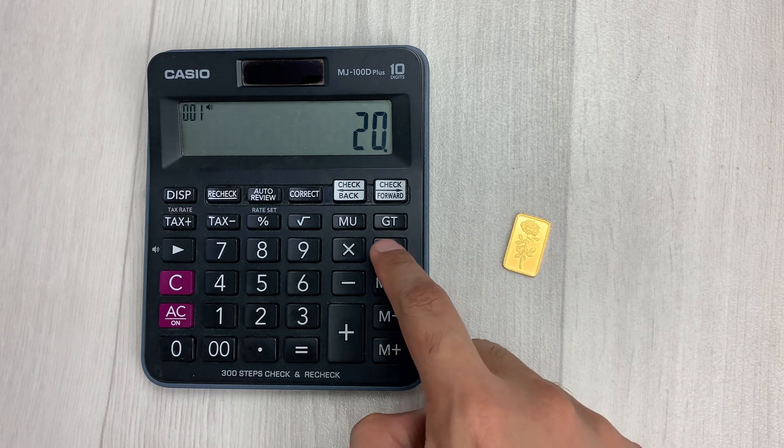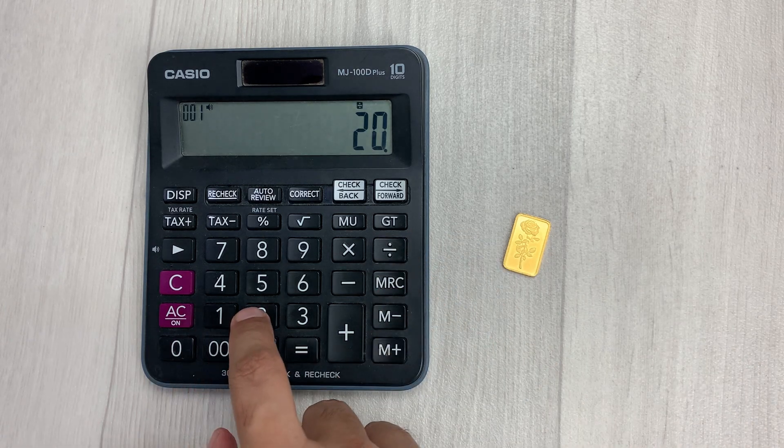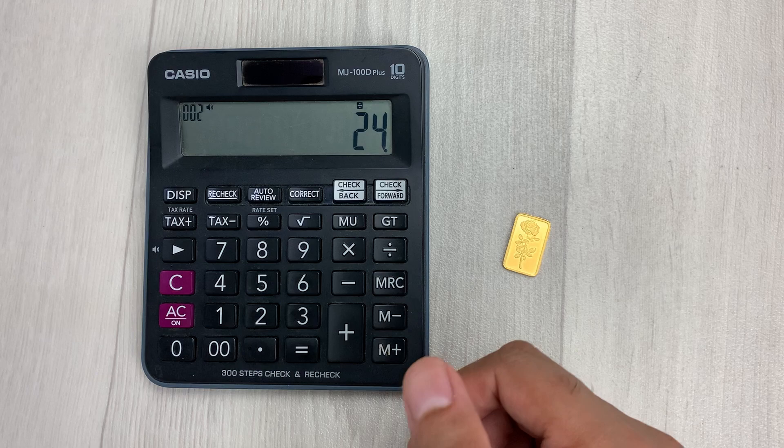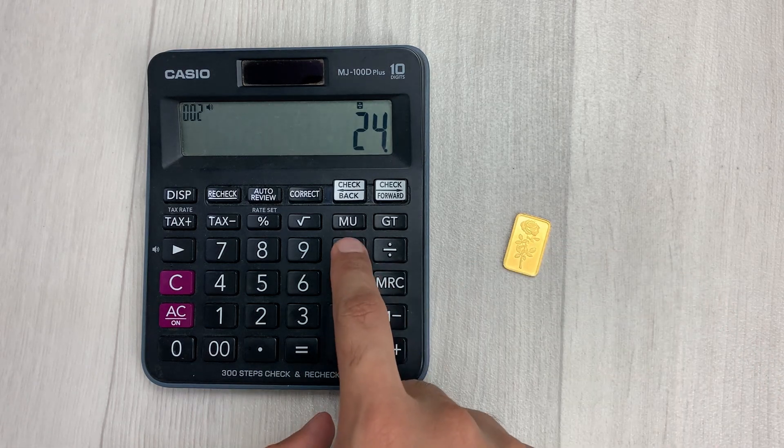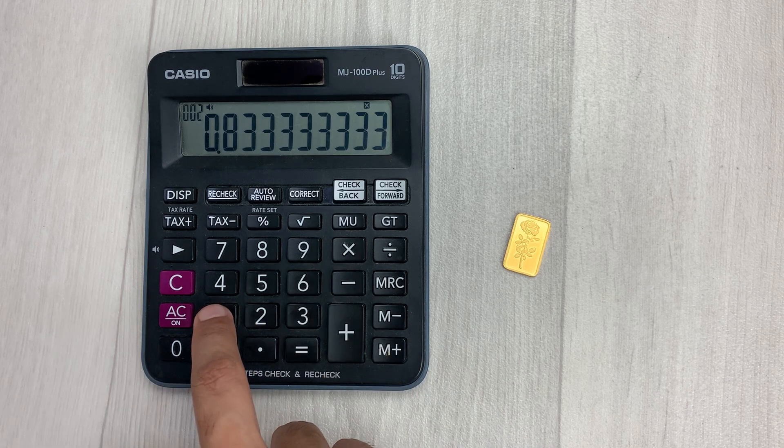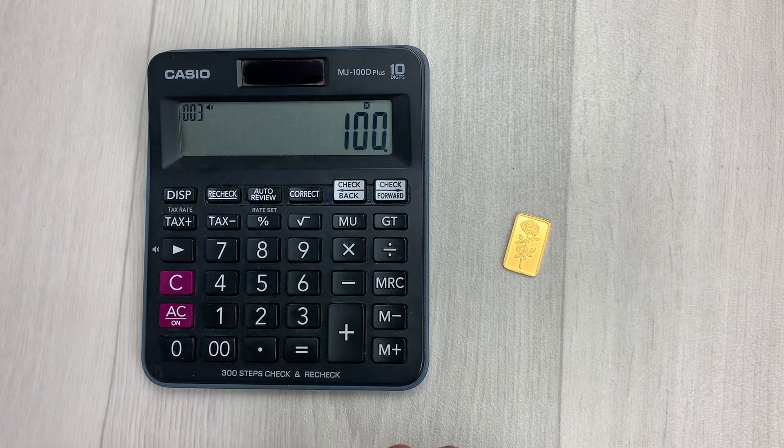I will press this divide button and then type 24. And then in the next step, you have to multiply it with 100. So I will press this multiply button and then type 100.